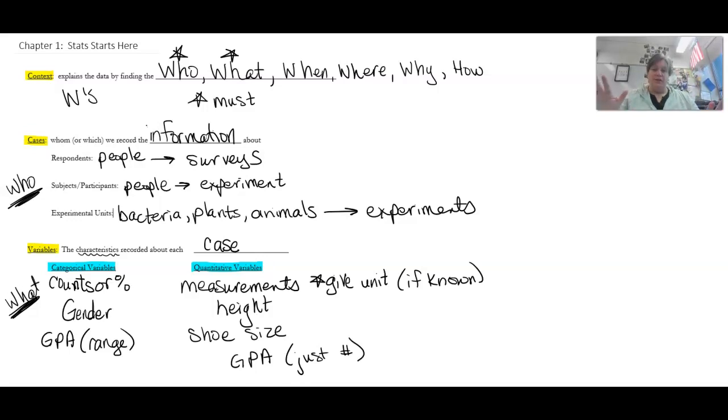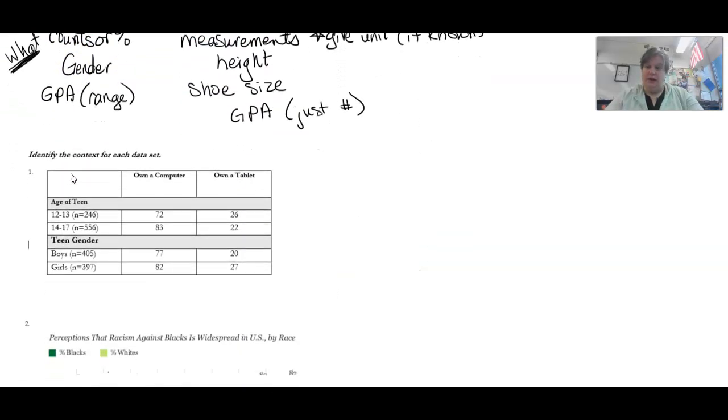Okay. So, the first section that we're kind of learning for chapter one is just talking about identifying context of problems and then identifying what type of variable it is. Sounds easy, but when we get into some problems, you're actually going to realize that it is a little tricky.